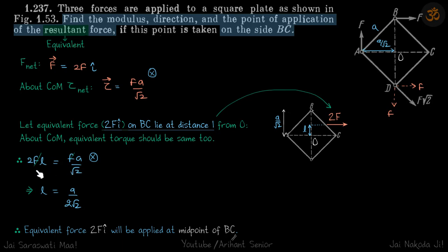So 2FL is equal to F into A by root 2, which gives L is equal to A by 2 root 2. Now because we have assumed the side to be A, this length is A by root 2, A cos 45.